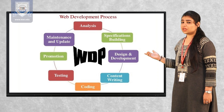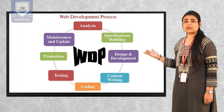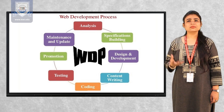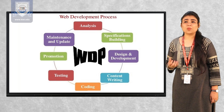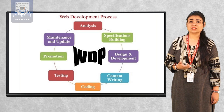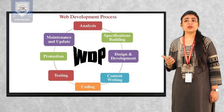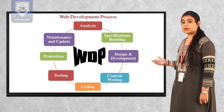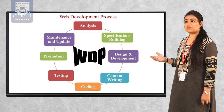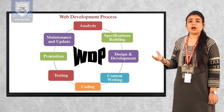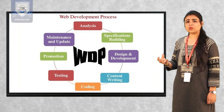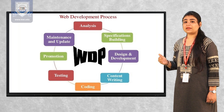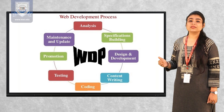The second phase is specification building, which is directly linked with requirement gathering — determining what all the requirements are, what the hardware specifications are, and what the software specifications are. The third phase is design and development, where we determine the prototype of our application so that we can take approval from the client and determine what improvements are required.